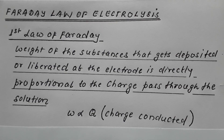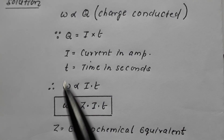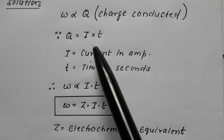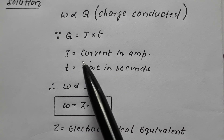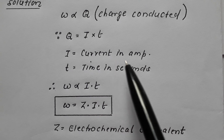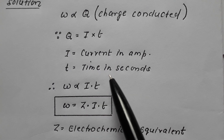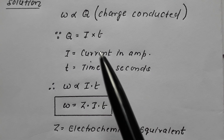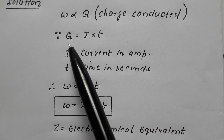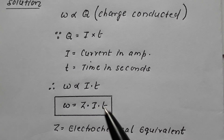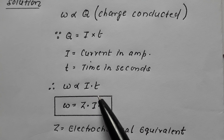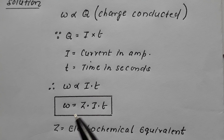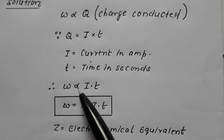Now remember that charge Q is equal to I into T, where I is current in amperes and T is time in seconds. Since W is proportional to Q, and Q equals I×T, therefore W is proportional to I×T.